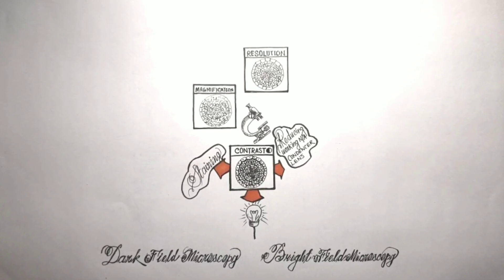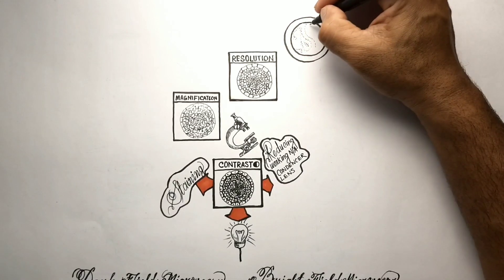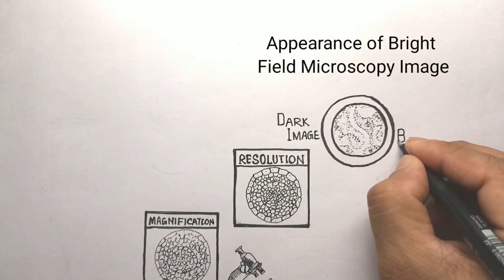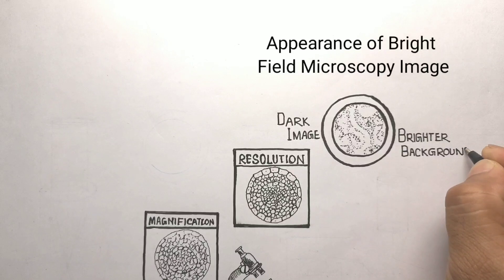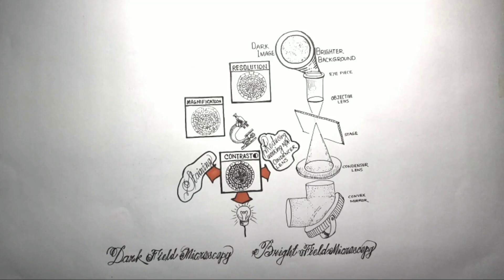Bright field microscopy is the simplest conventional illumination technique suitable for observing natural colors of a specimen or stained samples. The appearance of a bright field microscopy image will be a dark sample on a bright background with very little color difference or contrast. What is the reason for yielding such a dark image with a bright background?